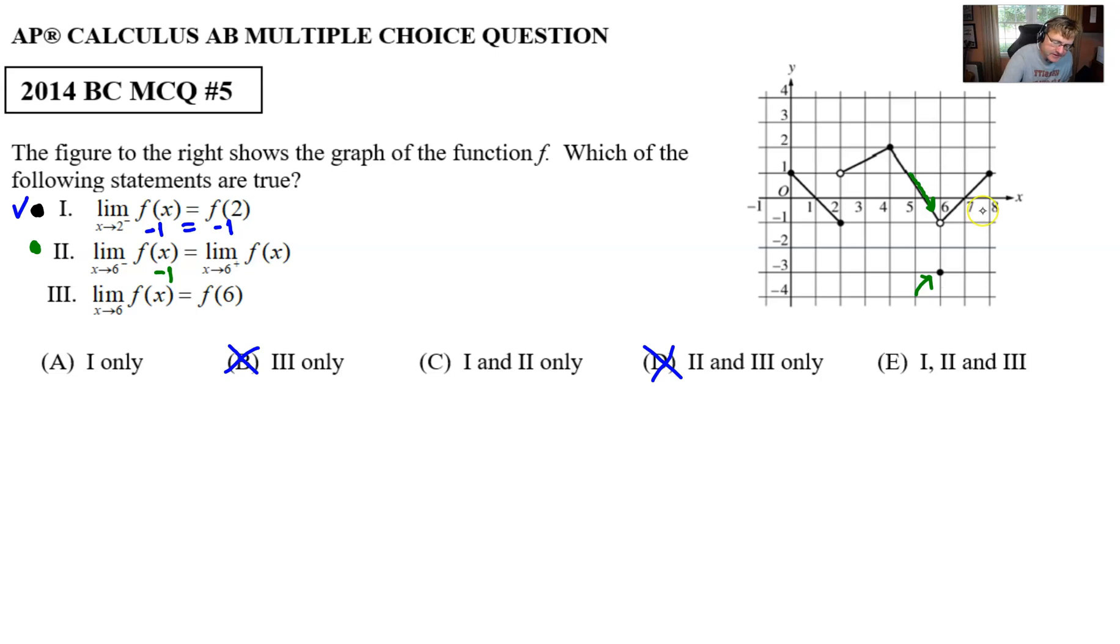That value there has absolutely nothing to do with the limit as x approaches 6. If we do the same thing on the other side, approaching 6 from the right, we're also going to get that value of -1. Fairly certain that -1 is equivalent to -1. Therefore, Roman numeral II is correct, and that enables us to eliminate choice A.